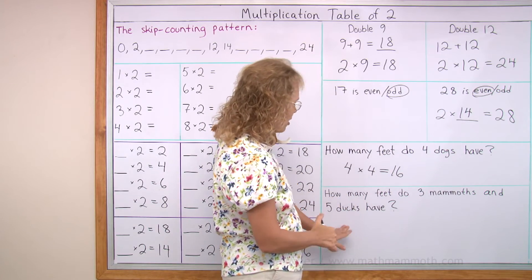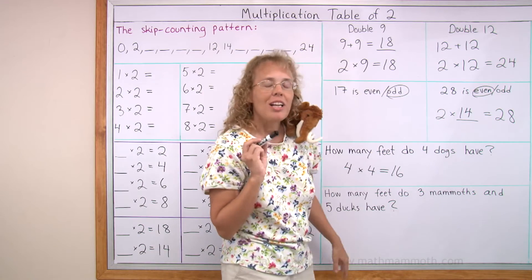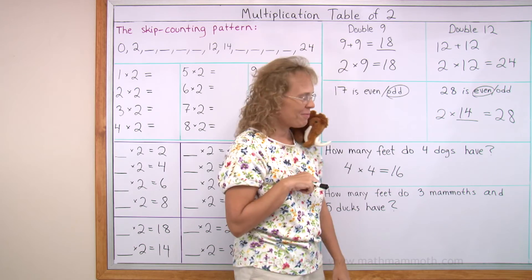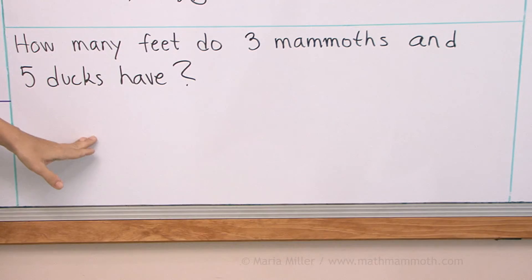And now we have something a little bit more challenging. How about how many feet do three mammoths and five ducks have? I want you to write a number sentence once again, not just go counting the feet. What will I write?